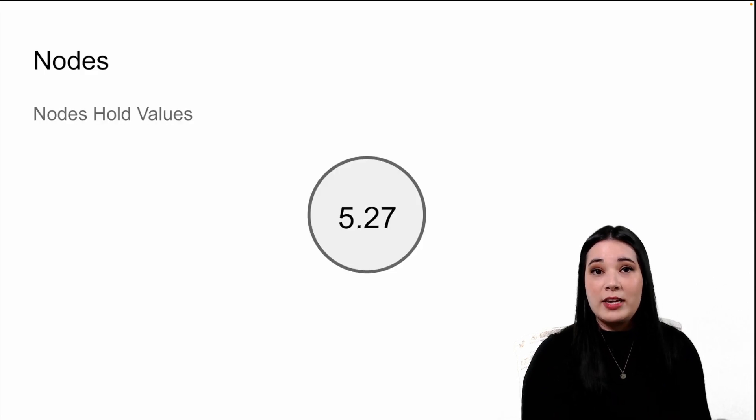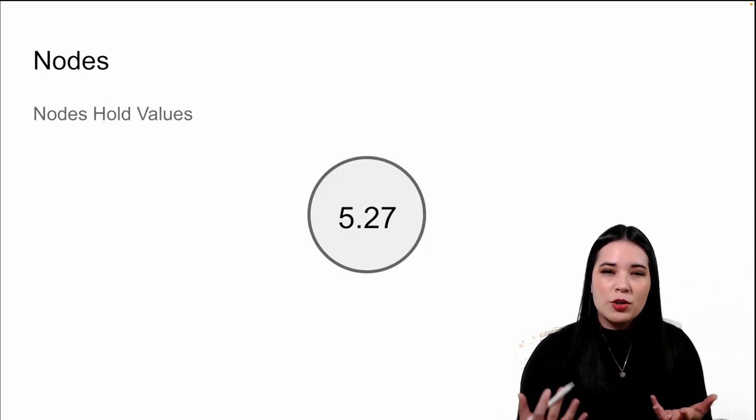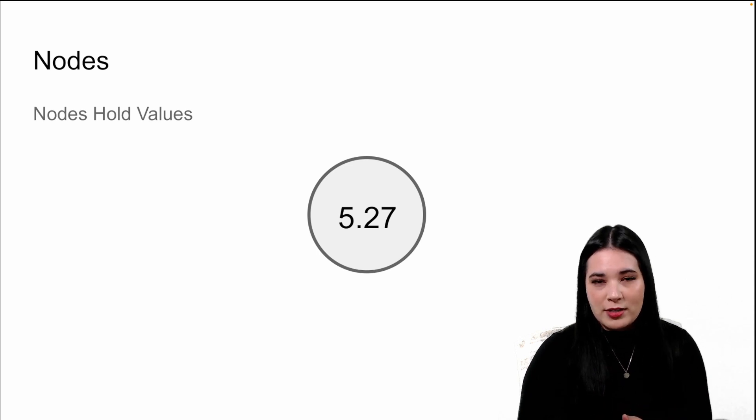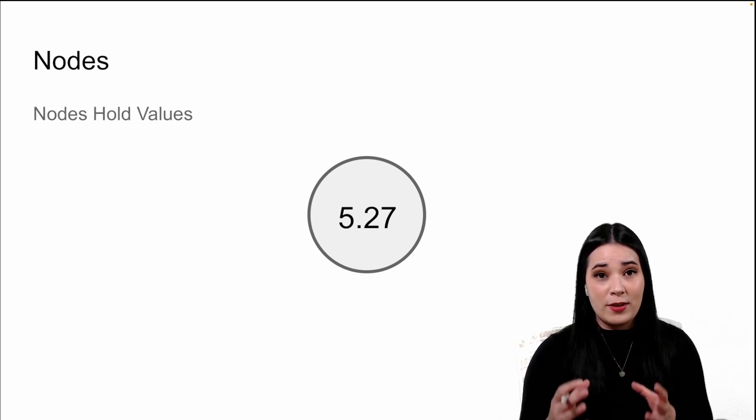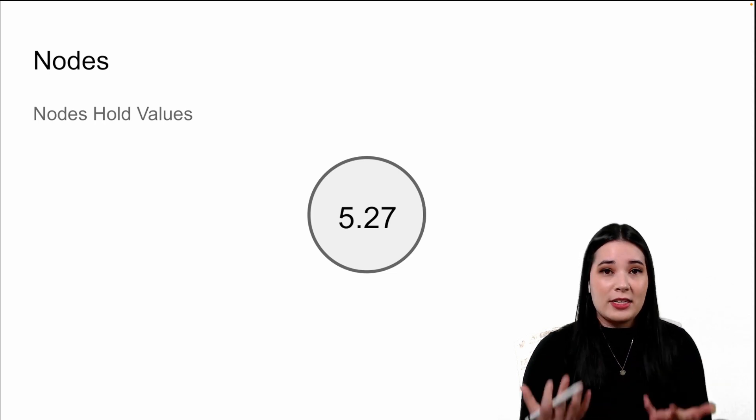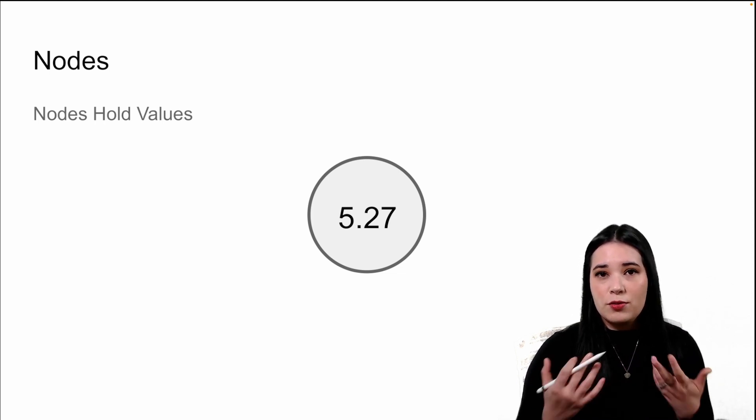The first component we need to learn about is a node. A node, usually represented by a circle in drawings of neural networks, is just a container that holds a specific value. For instance, here's a node that is holding the value 5.27.